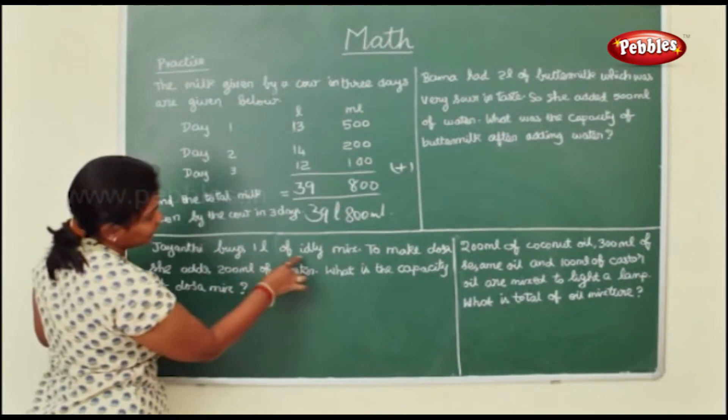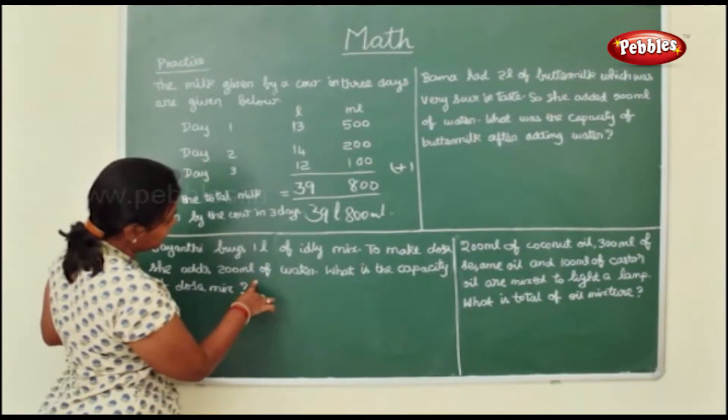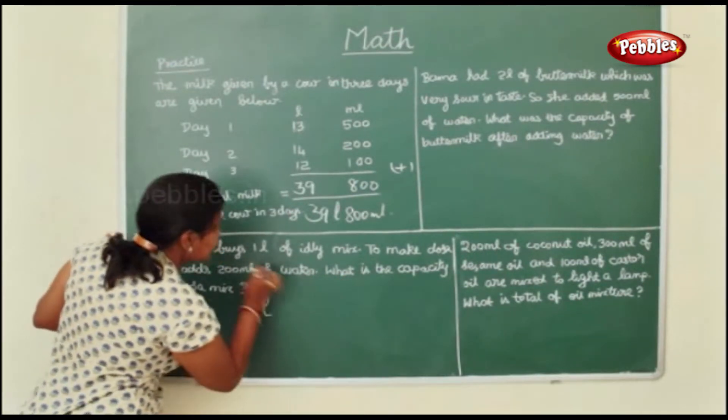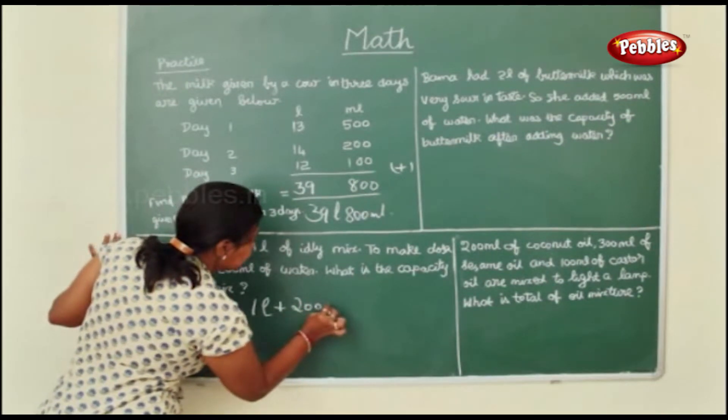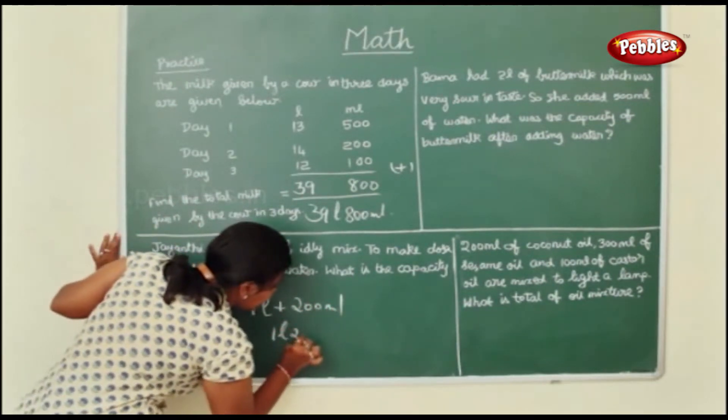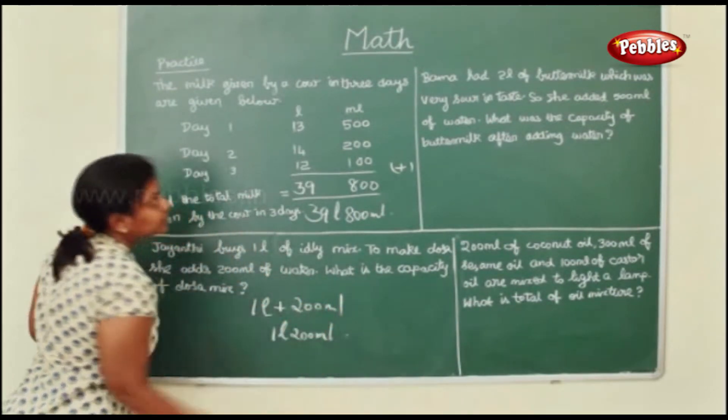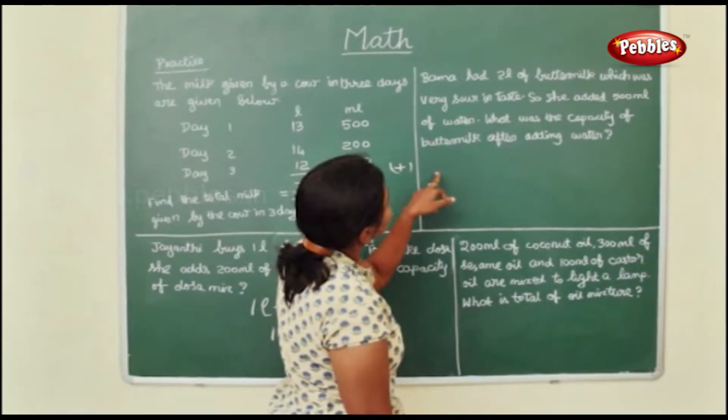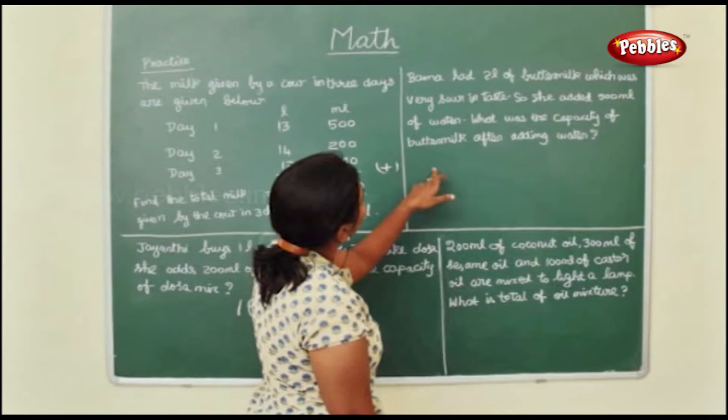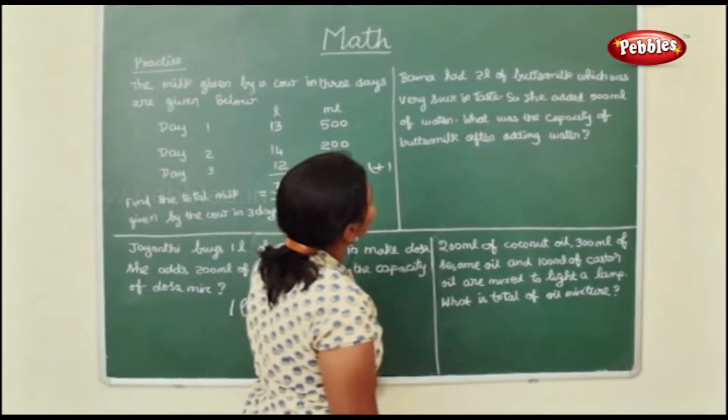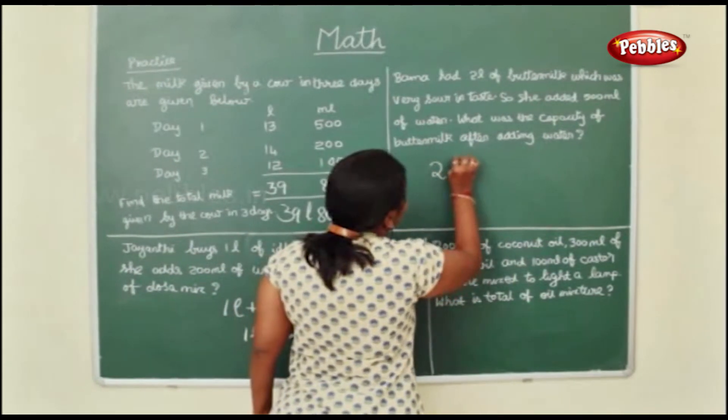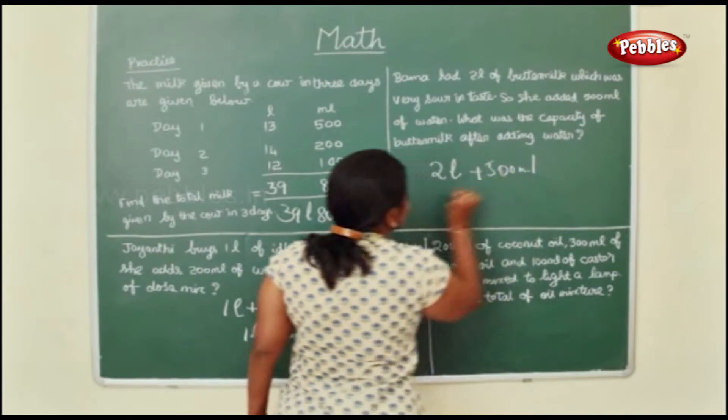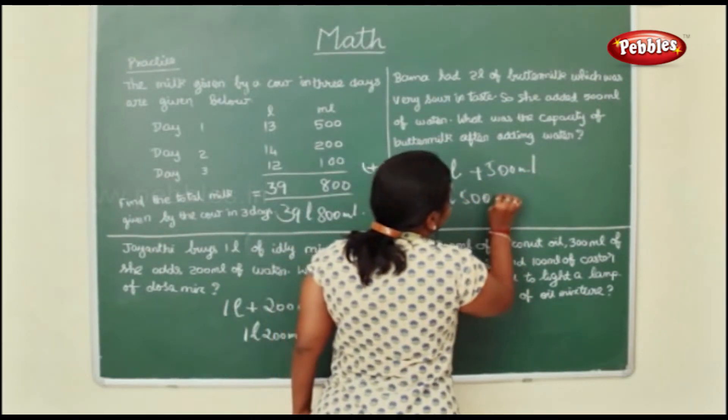Here Jainthi buys 1 liter of idli mix. To make dosa she adds 200 ml of water. So what is the total capacity? 1 liter plus this 200 milliliters. So it gives you 1 liter and 200 milliliters. Here Bama had 2 liters of buttermilk which was very sour in taste. So she added 500 ml of water. What was the capacity of the buttermilk after adding water? She had 2 liters of buttermilk. She added 500 ml. So the total capacity will be 2 liters and 500 milliliters.